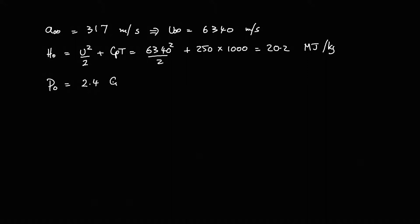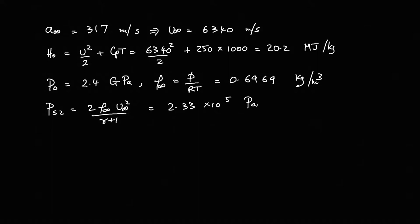We can calculate the total pressure that applies for this, and if you do the sums it turns out to be 2.4 GPa. We need to know what our free stream density is, so we can do the matching. So that's equal to P/RT, which comes out to be 0.6969 kg per metre cubed. We would like to know what our pressure is in the shock layer, so that's going to be equal to 2ρ∞u∞²/(γ+1) from the formula we just produced, and that's equal to 2.33 × 10⁵ Pascals, or 2.33 atmospheres. This is the flight conditions.